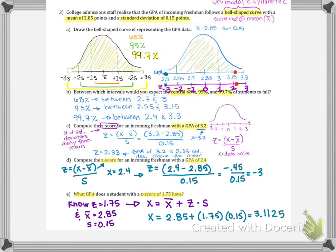So this would be the GPA, 3.1125 is the GPA for the student who has a Z-score of 1.75. And up in part D, we had actually found the Z-score for someone who has a GPA of 2.4. So we can be asked to find the Z-score or asked to work backwards and find the actual missing X value. Both are fair game. Catch me in the next video.